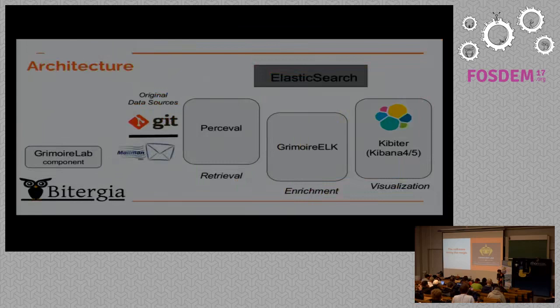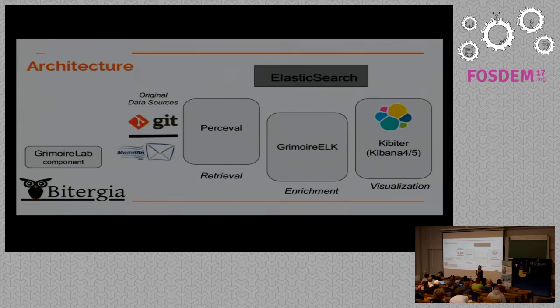Grimoire Lab has a very simple data flow structure. It starts in repositories — Git, GitHub, Mailman, whatever. We have a tool called Perceval which basically goes to repositories, extracts information, and uploads to Elasticsearch, though Perceval is completely database-agnostic. It only gets data and produces a collection of JSON documents that you can upload anywhere. In our case, we have software for uploading to Elasticsearch. That's what we call the raw index. An index in Elasticsearch is kind of a database. The raw indexes contain exactly the same information as the original data source, so you can query Elasticsearch instead of going back to the original.